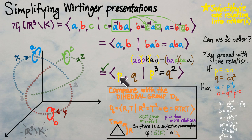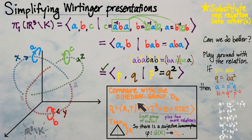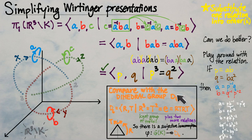The dihedral group also has the extra relation RTRT = identity describing how rotation and reflection interact. So the dihedral group presentation looks very much like the knot group, sharing R³ = T² (paralleling P³ = Q²). However, in the dihedral group R³ and T² are both equal to the identity, which makes it a finite group. In the knot group they are equal to each other but not to the identity, so words can have infinite length.